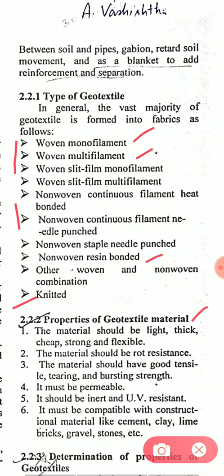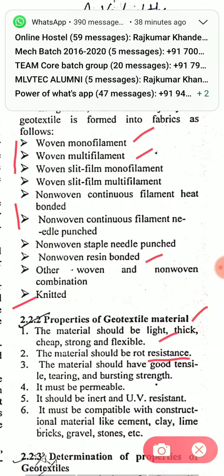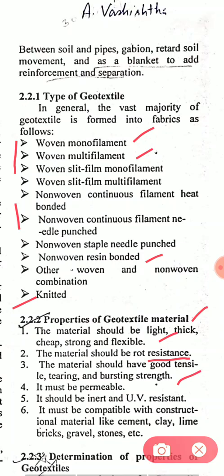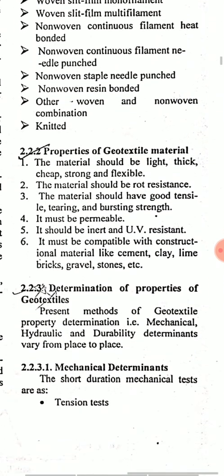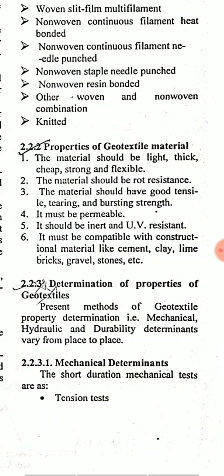Properties of geotextile material: the material should be light, thick, cheap, strong, and flexible. It should be rot resistant with good tensile, tearing, and bursting strength. It must be permeable since it is used for reinforcement and filtration. It should be inert and ultraviolet resistant, and must be compatible with construction materials like cement, clay, lime, bricks, gravel, and stone.